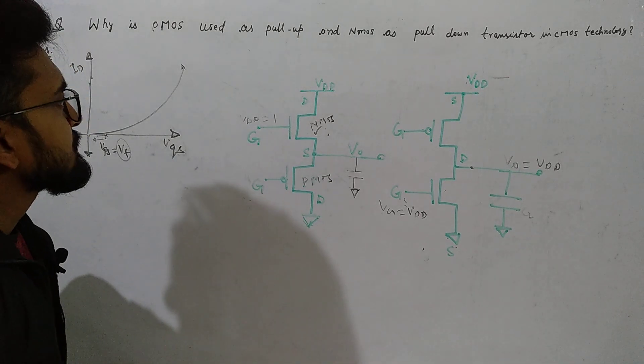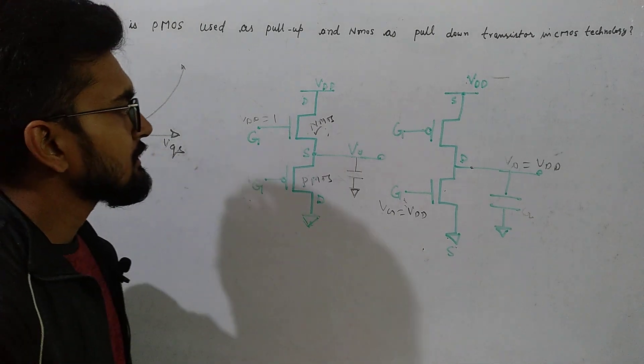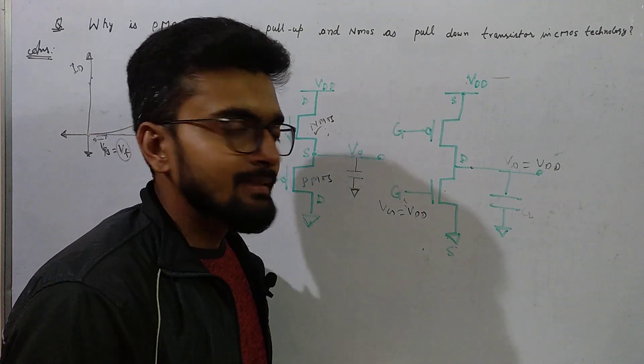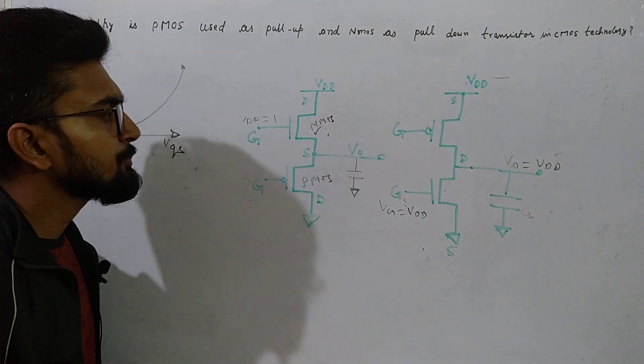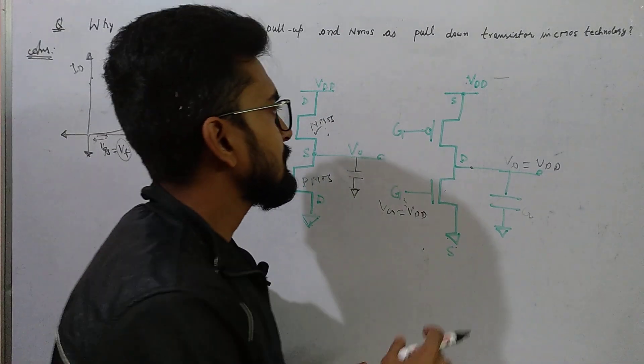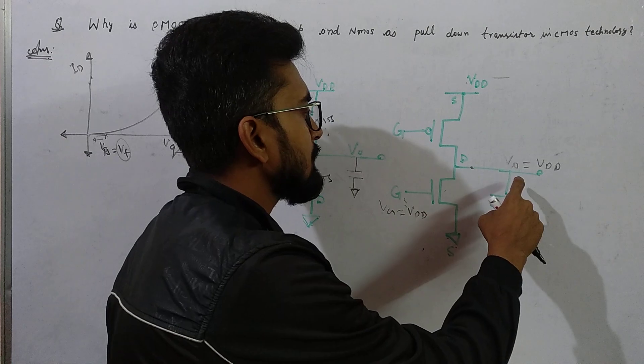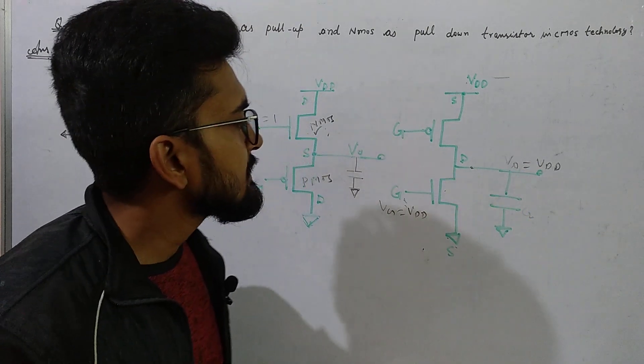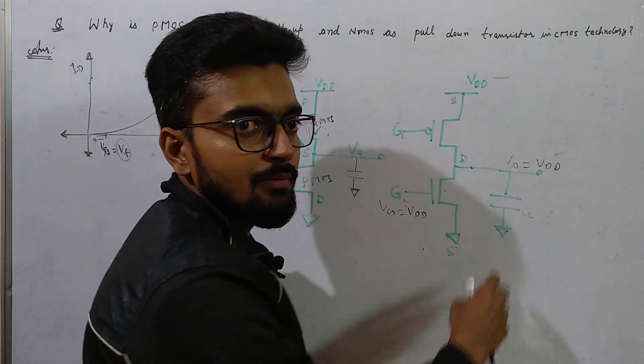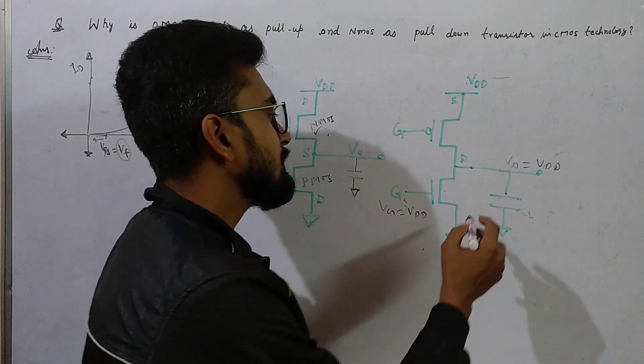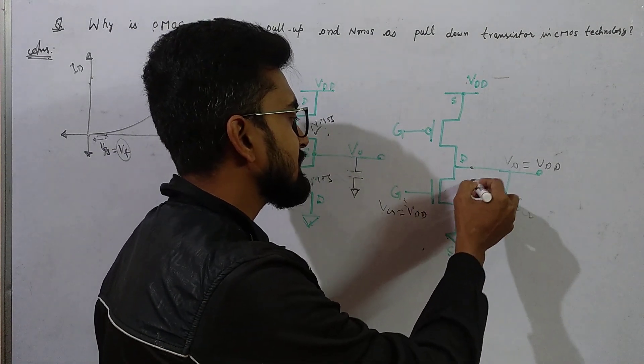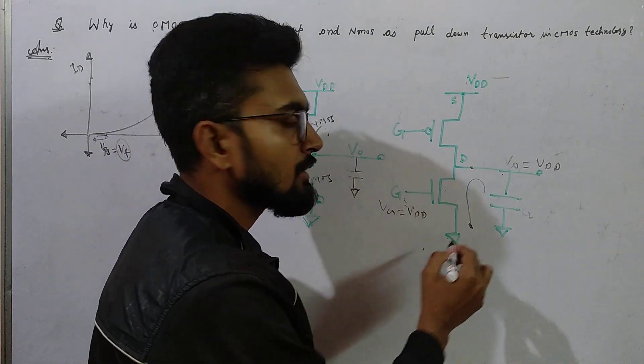Why is PMOS considered as pull-up and NMOS considered as pull-down network in CMOS technology? Pulling up in value means charging the capacitor from 0 volt to VDD, which is the pull-up concept. Pull-down means discharging the capacitor from VDD to ground.